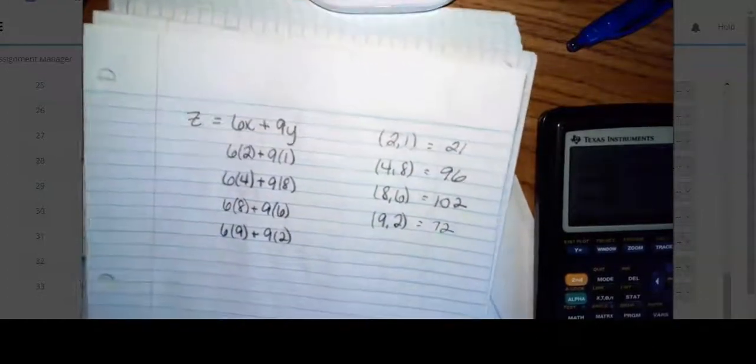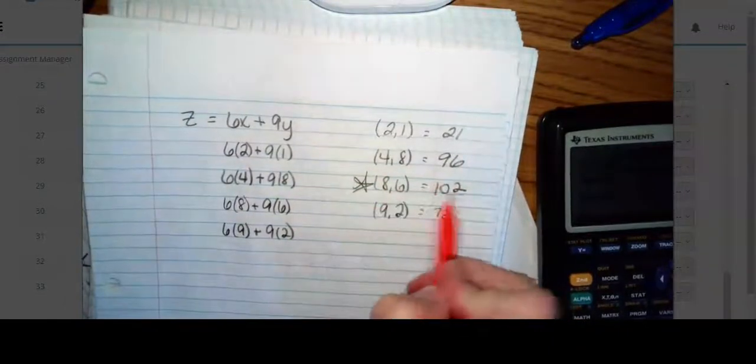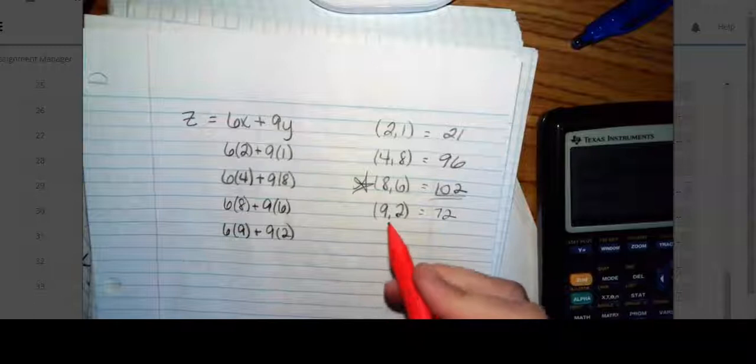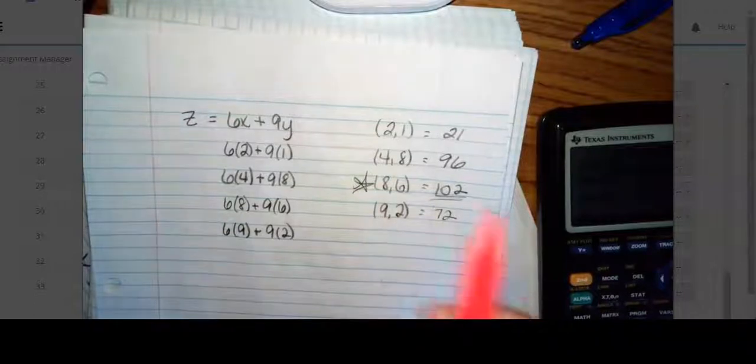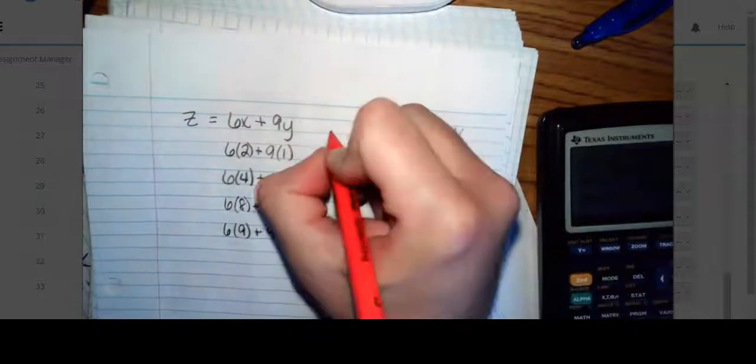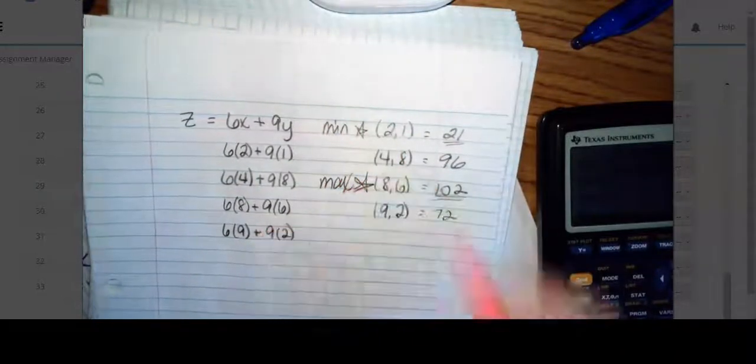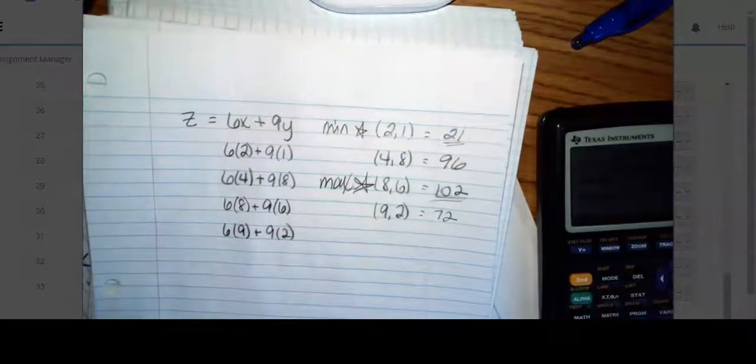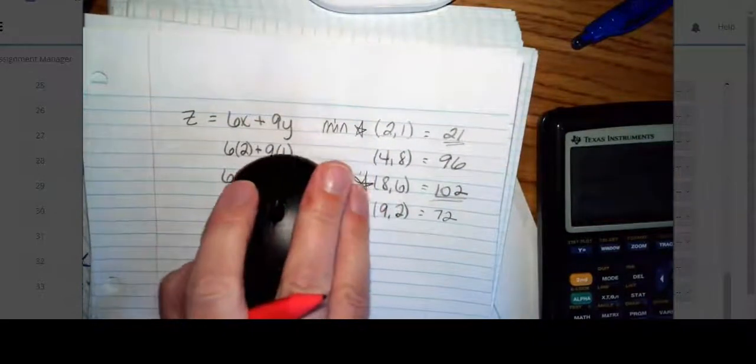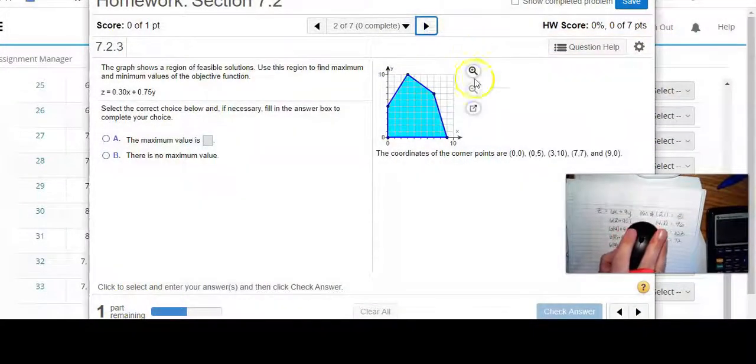So we have found our values. Which one is the biggest? Well, this is the biggest because it's 102. So that's my maximum. Which one is the smallest? The smallest is 21, and that's my minimum. So my minimum value and my maximum value. So we now know what that is, so let's do it again.